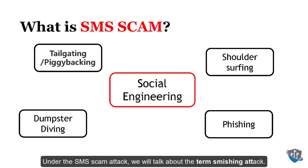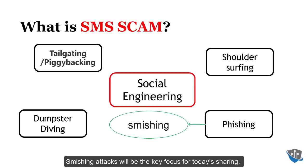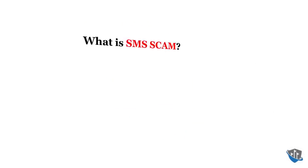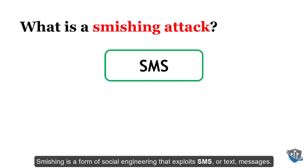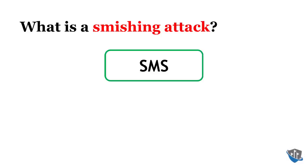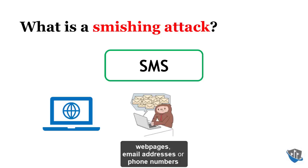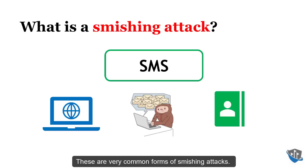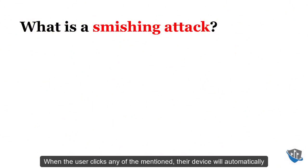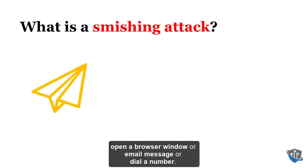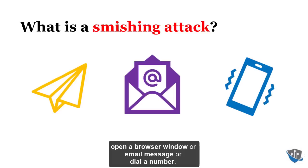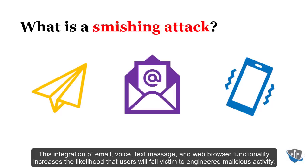Under SMS scam attacks, we will talk about smishing. Smishing is a form of social engineering that exploits SMS, or text, messages. They fall into the same classification as phishing. Text messages can contain links to web pages, email addresses, or phone numbers. When the user clicks any of these, their device will automatically open a browser window, an email message, or dial a number. This integration of email, voice, text message, and web browser functionality increases the likelihood that users will fall victim to malicious activity.